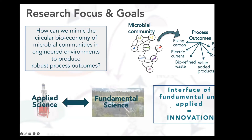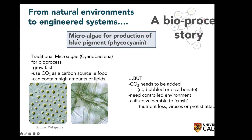This really exists at the interface of fundamental and applied sciences, where there's a lot of opportunity for innovation. One example from my postdoc at the University of Calgary involves microalgae — specifically cyanobacteria — for production of blue pigment, or phycocyanin. Traditional cyanobacteria cultivation is used in bioprocesses because it grows fast and uses CO2 as a carbon source, and many cyanobacteria contain high lipid amounts useful for biofuels. However, CO2 usually needs to be added by bubbling or adding bicarbonate, and it needs a controlled environment.